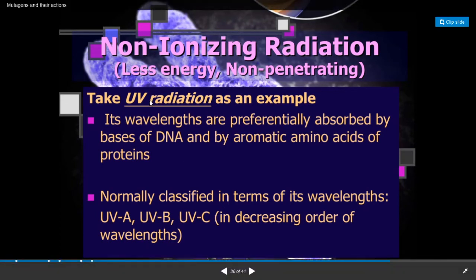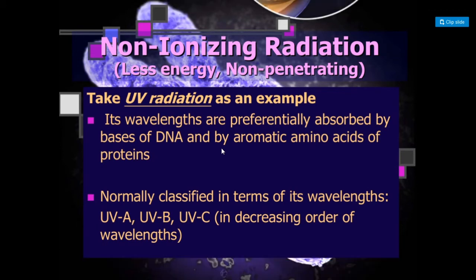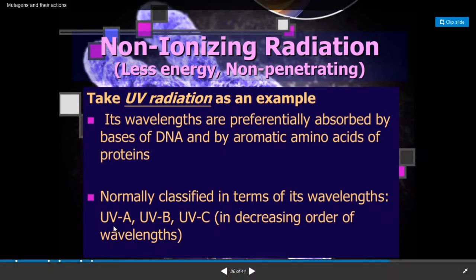Non-ionizing radiations have less energy and no penetrating power, and include ultraviolet radiations. The wavelength of these UV radiations is absorbed by the bases of DNA and by aromatic amino acids of proteins. These are classified in terms of their wavelength — for example, UVA, UVB, and UVC — in decreasing order of wavelengths.